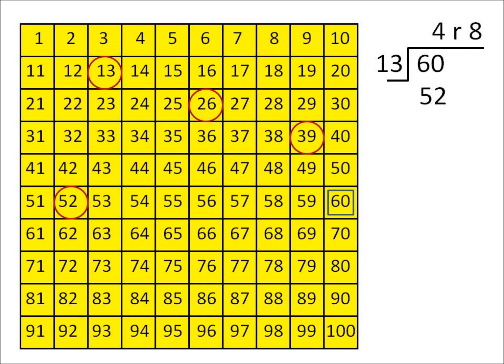So they put the 4 as their quotient, we have 4 numbers that we have circled, and put 52 as the multiplication step of the long division.